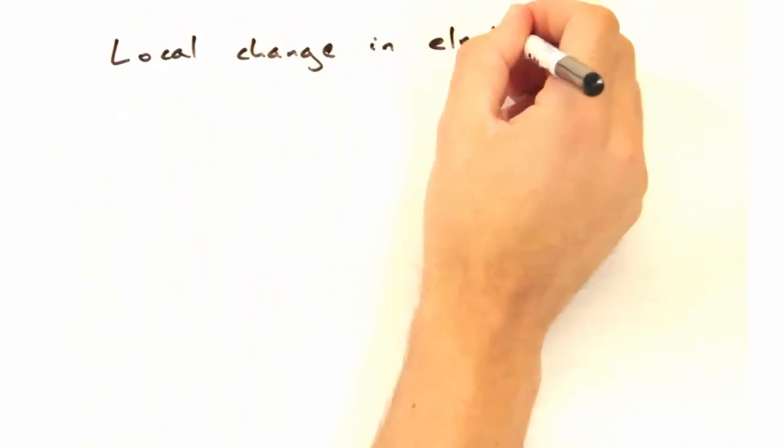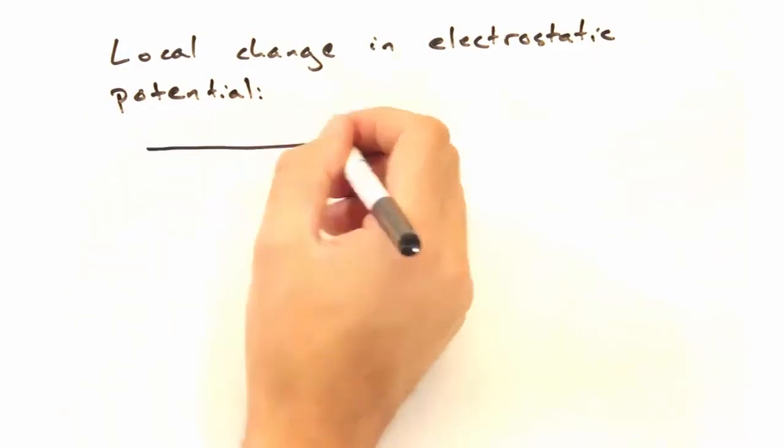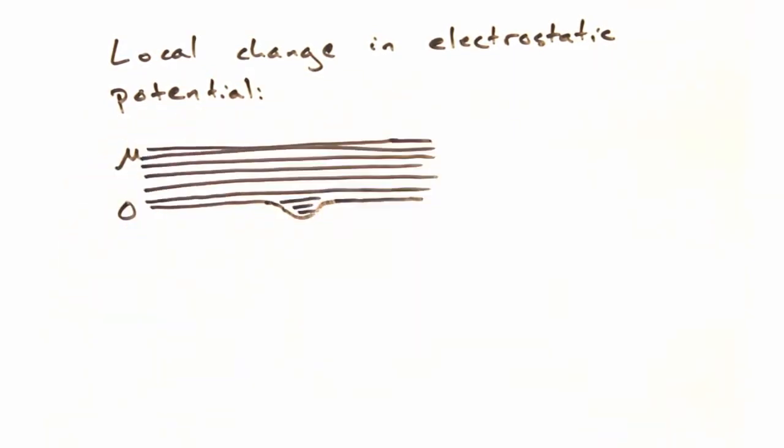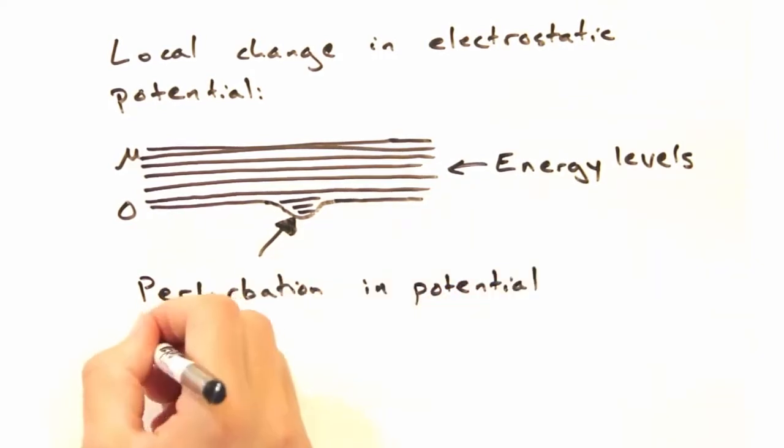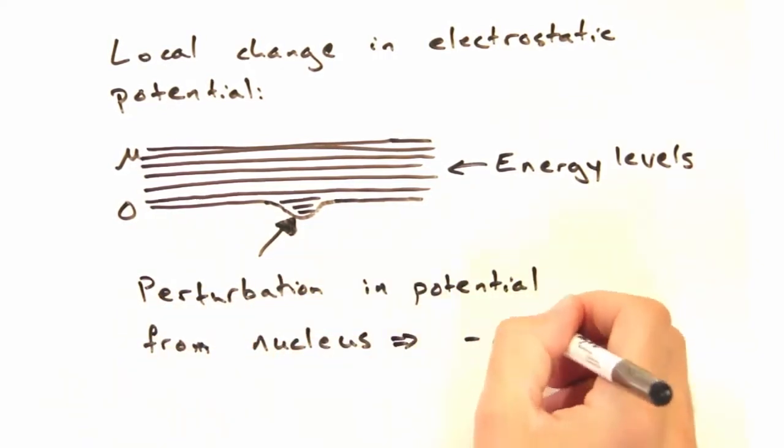So we're going to start by bringing in a nucleus, which will create a local change in the electrostatic potential. The filled energy levels are shown with these lines, and the perturbation is this bump here. The strength of the perturbation is given by minus E delta V.